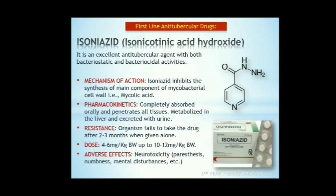The drug is completely absorbed when given orally and penetrates all body tissues, tubercular cavities, placenta, and meninges. It is extensively metabolized in the liver and excreted in urine as acetyl isoniazid. If given alone, apparent resistance emerges after 2-3 months due to failure of the drug being taken up by the organism. The dose in animals is 4-6 mg/kg body weight, which may be increased to 10-12 mg/kg. Adverse effects include dose-dependent peripheral neuritis and neurological manifestations such as paresthesia, numbness, and mental disturbances.